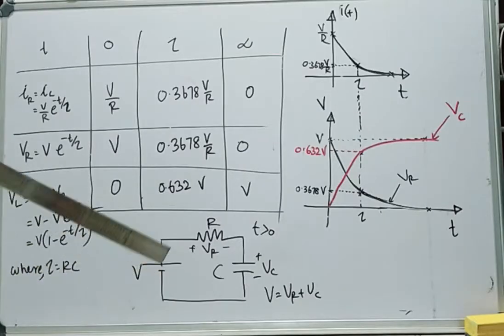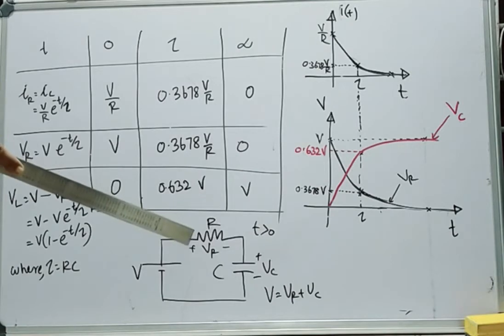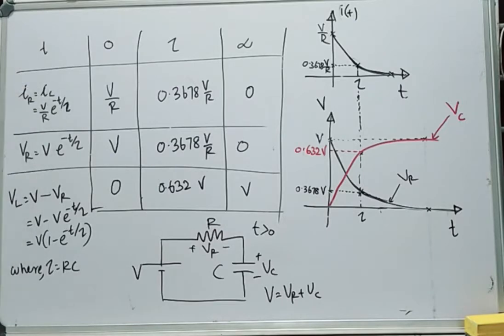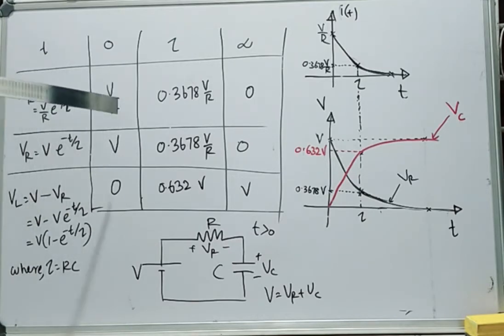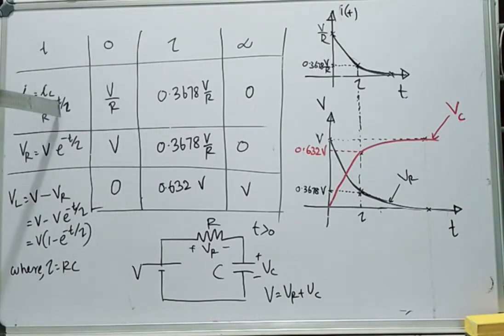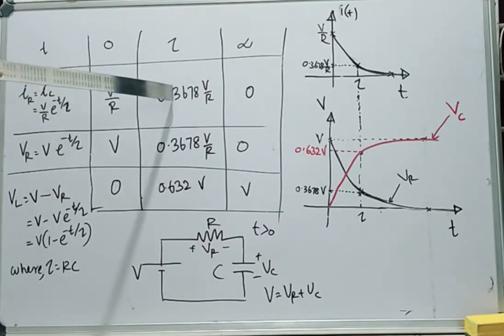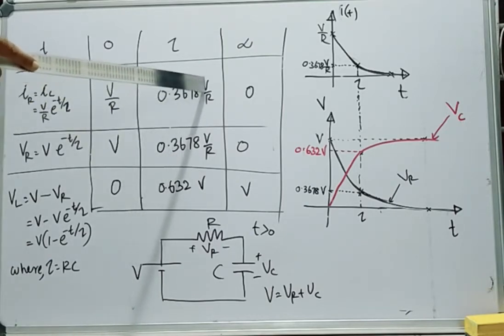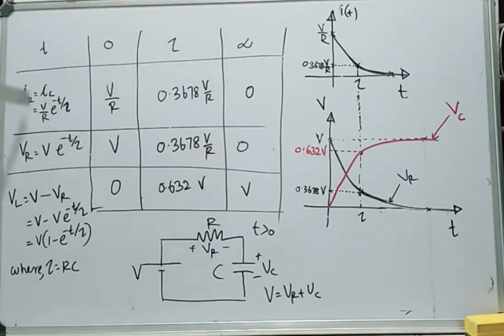Now let's see the variation of current through the circuit and voltage across R and C with respect to time. As this circuit is series, current through the resistor equals current through the capacitor. The expression for current is (V/R) times e raised to minus T/tau. At T equal to 0, the term becomes 1, so I(R) becomes V/R. When substituting T equal to tau, e raised to minus 1 gives 0.3678, so I(R) becomes 0.3678 times V/R. At T equal to infinity, this term becomes 0.